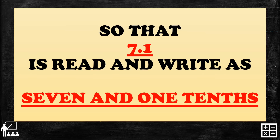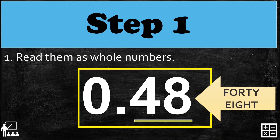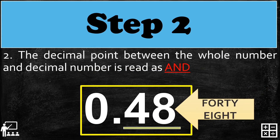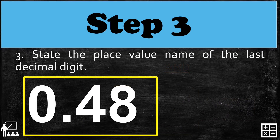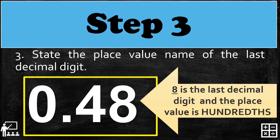Let's try another. I have here zero point forty-eight. As you can see, we don't have a whole number part, so we're just going to read the fractional part, which is forty-eight. If you don't have a whole number part, we're not going to use 'and.' Step three: state the place value name of the last decimal digit. The last decimal digit is eight and the place value is hundredths.